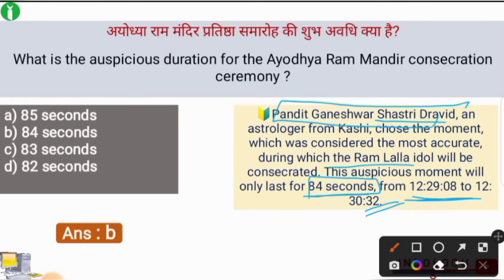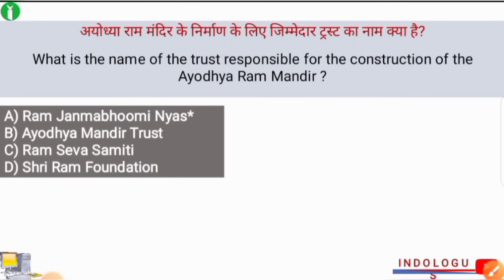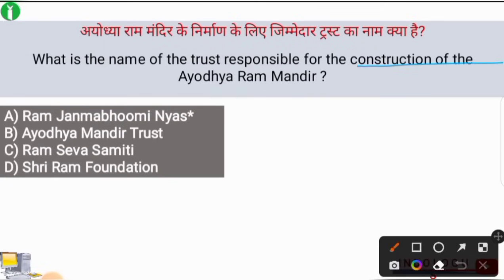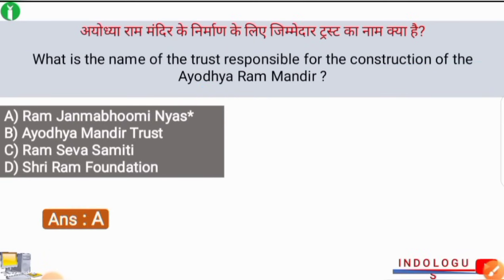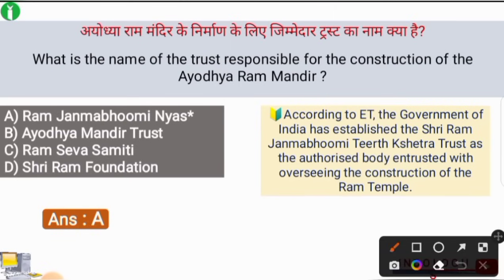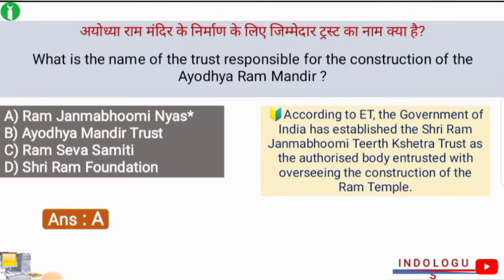Pandit Ganeshwar Shastri Dravid, the astrologer from Kashi, selected this time duration. What is the name of the trust responsible for the construction of Ayodhya Ram Mandir? The correct answer is option number A — Ram Janmabhumi Nyas, with its complete name being Shri Ram Janmabhumi Tirth Chhetra Trust. The government of India established this trust as the authorized body entrusted with overseeing the construction of Ram Mandir.